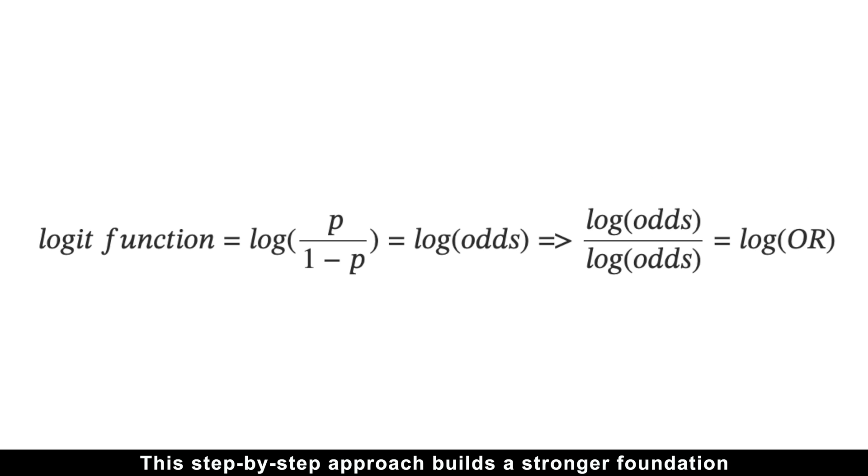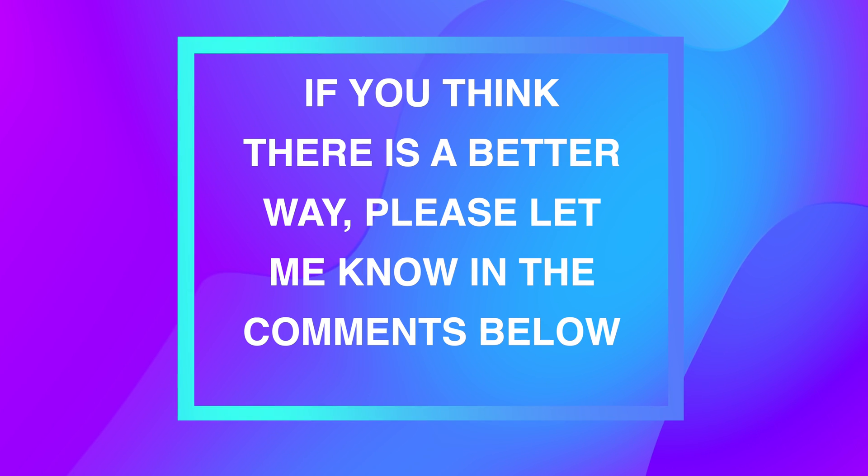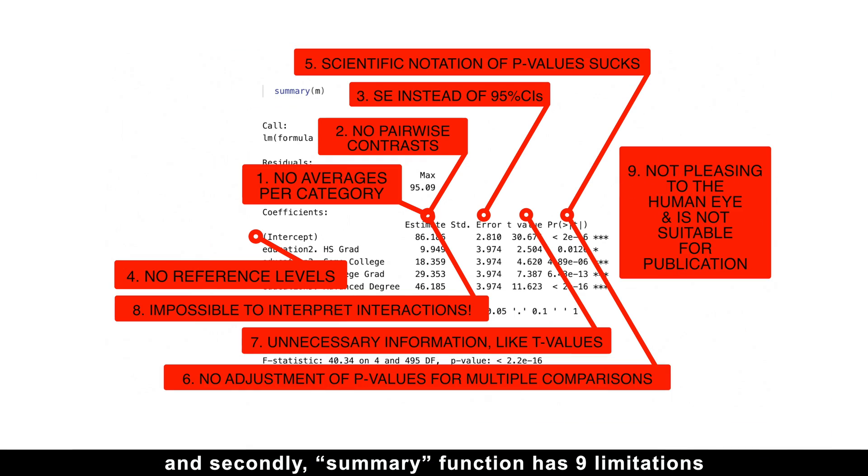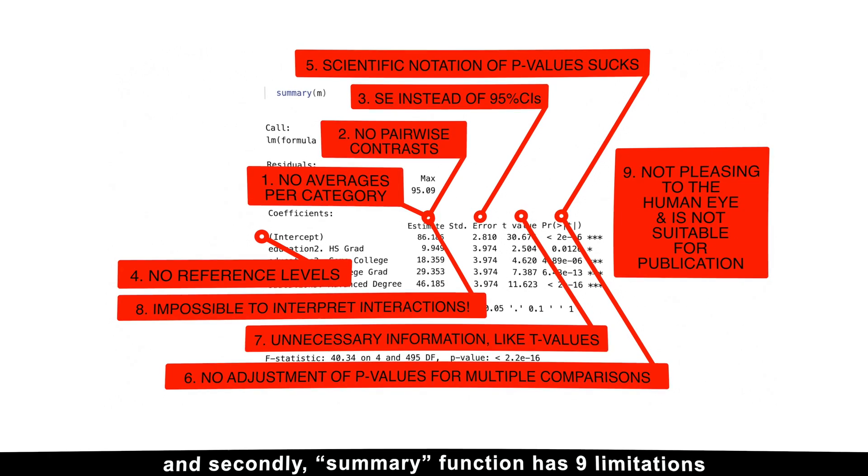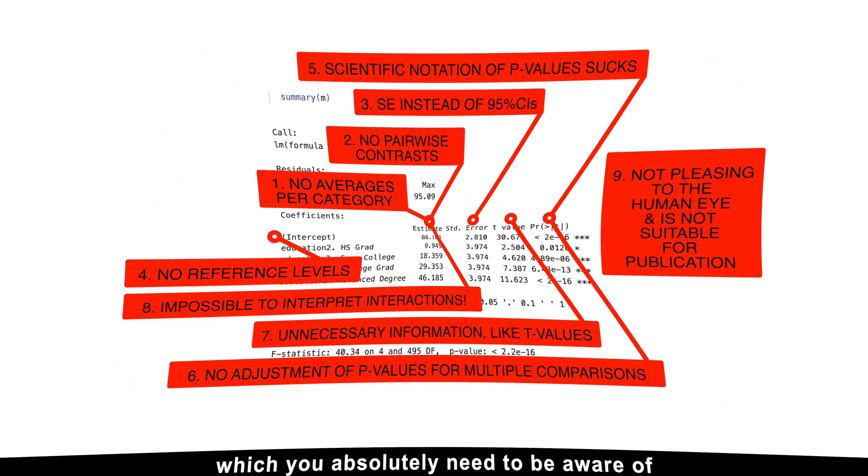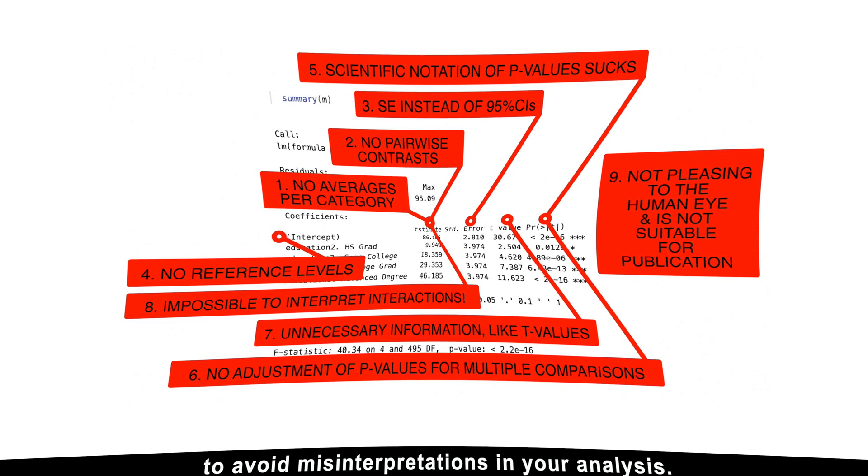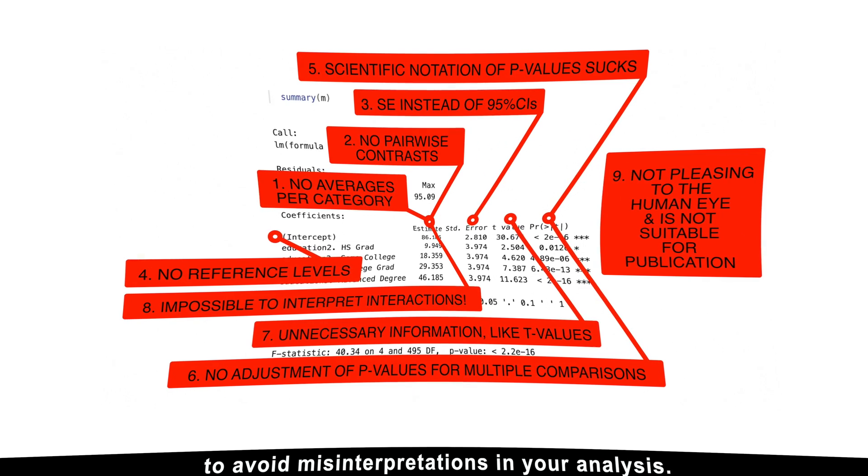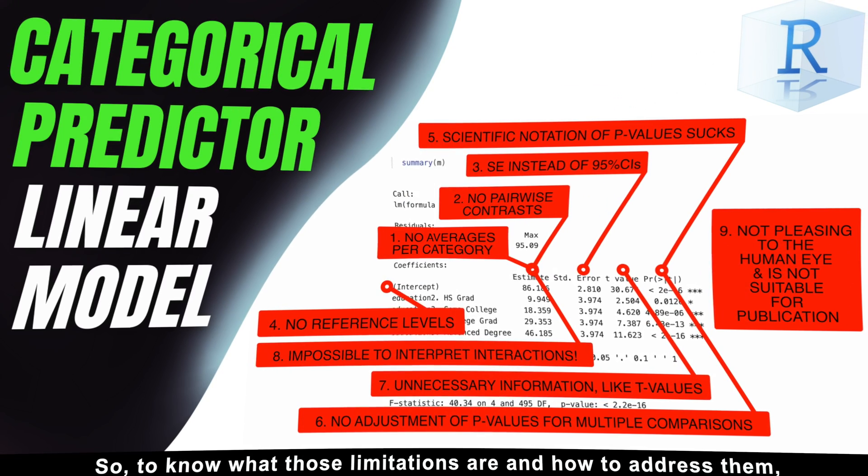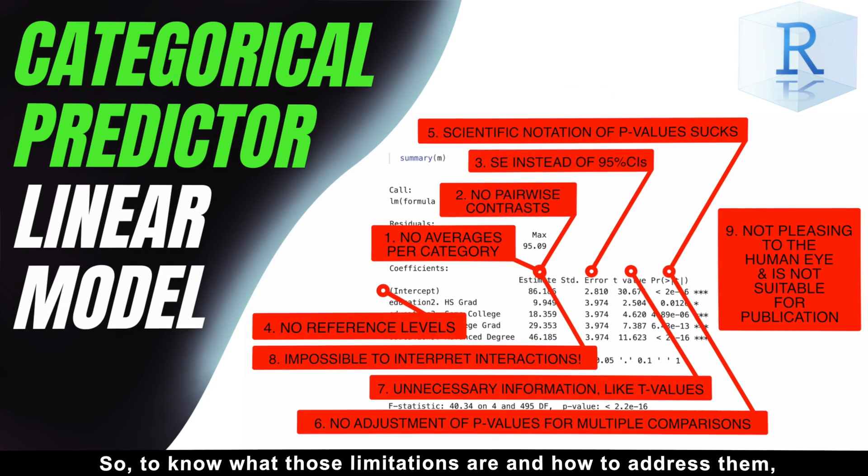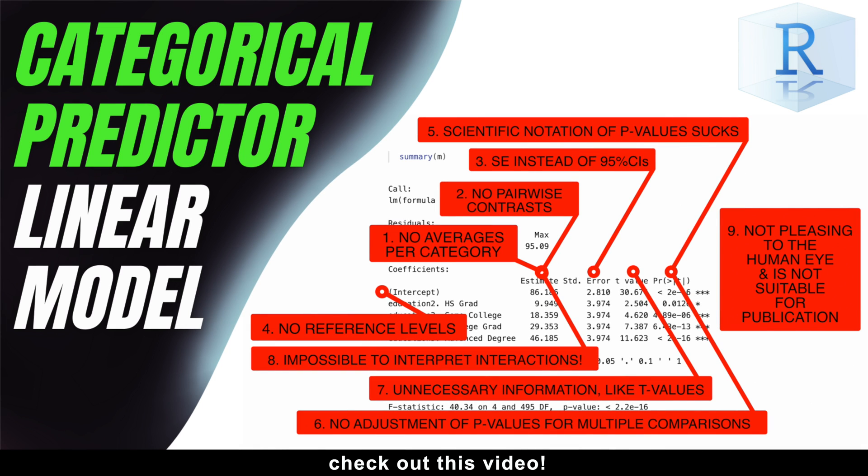And if you think there is a better way, please let me know in the comment section below. I'll be very interested to know your thoughts. And secondly, the summary function has nine limitations which you absolutely need to be aware of to avoid misinterpretations in your analysis. So to know what those limitations are and how to address them, check out this video.